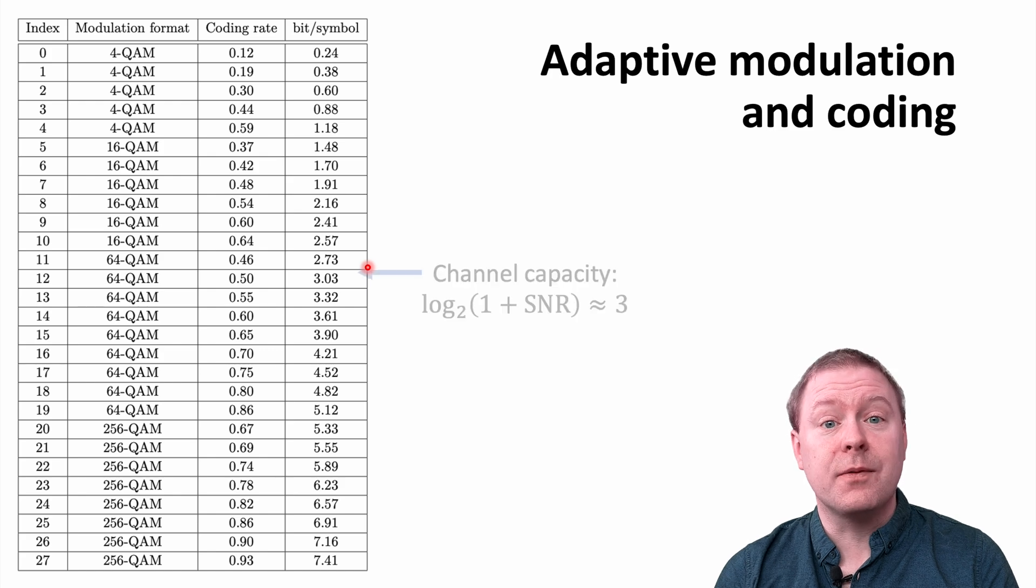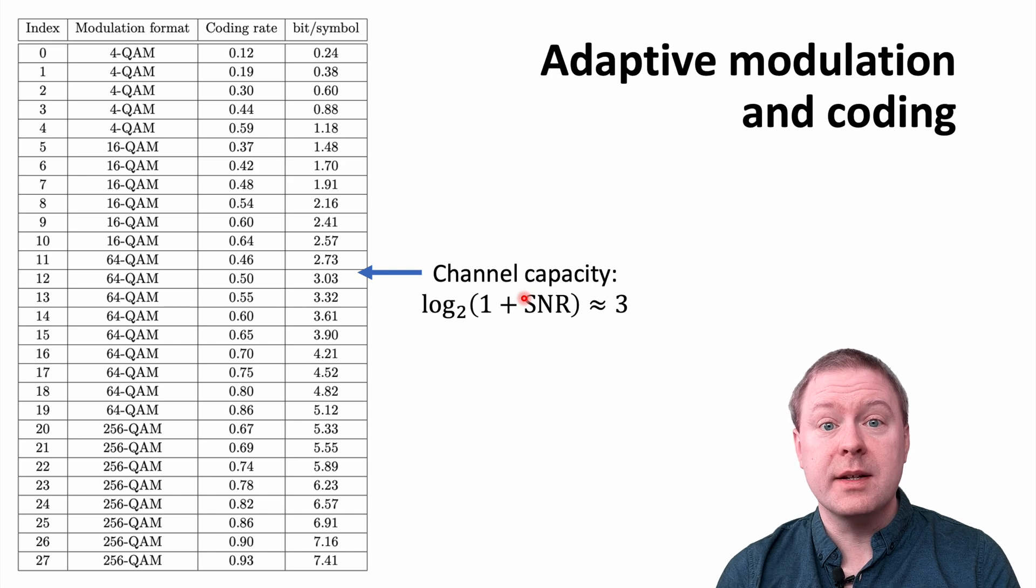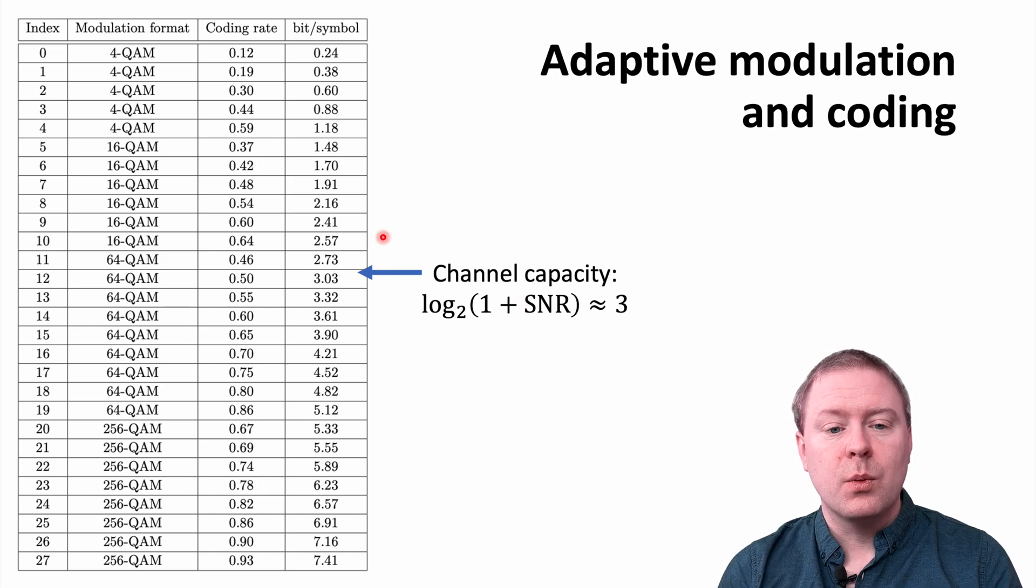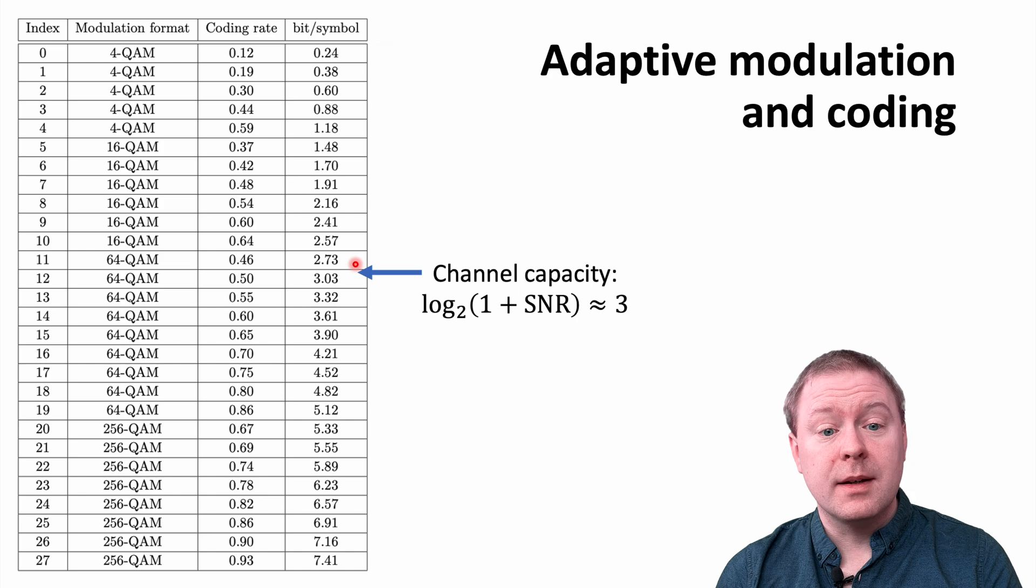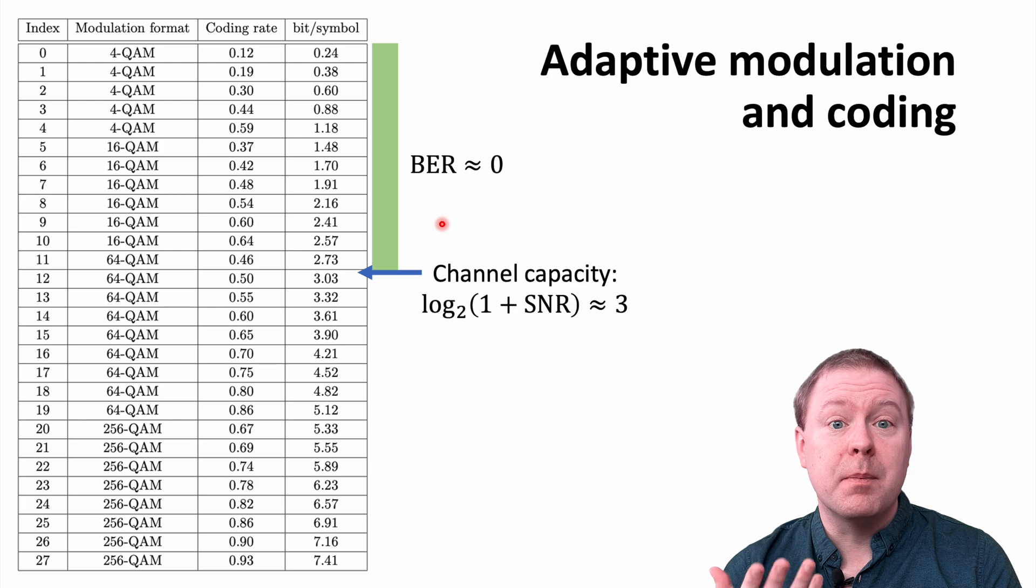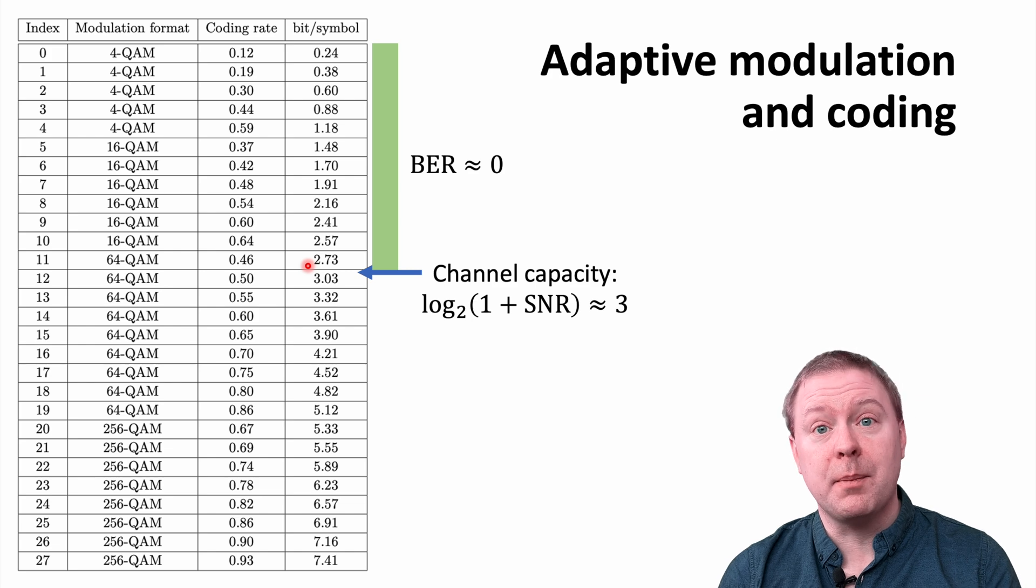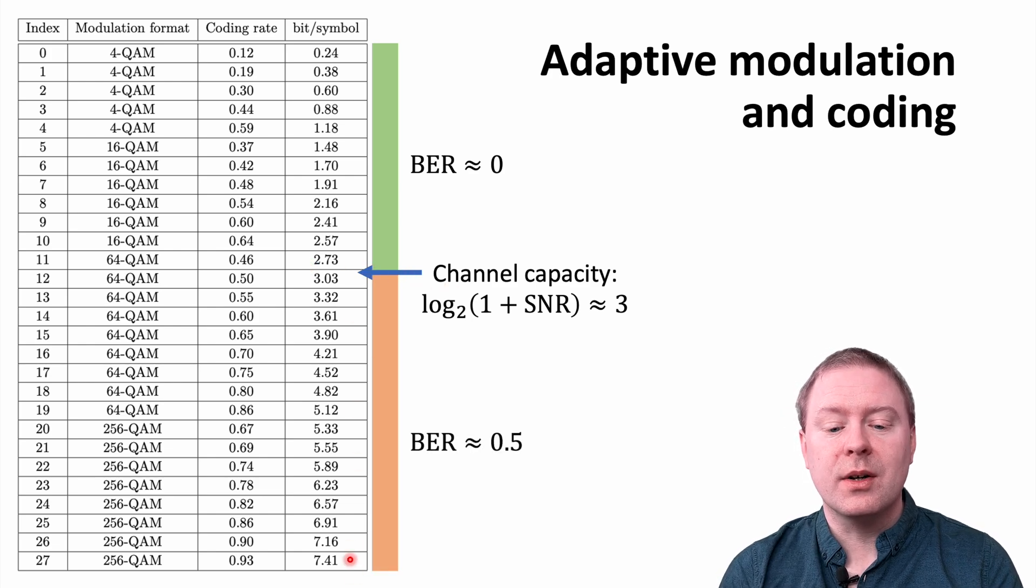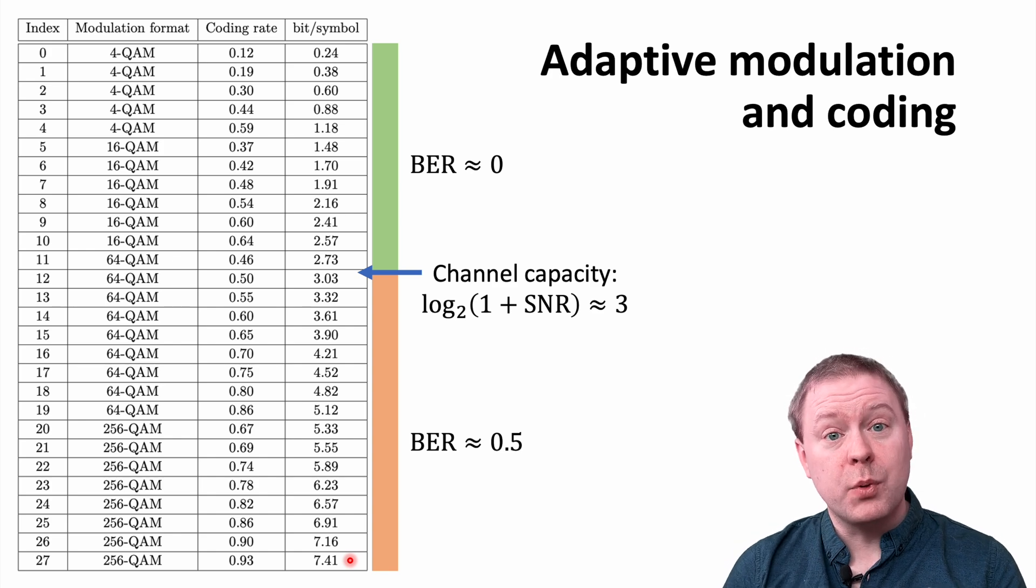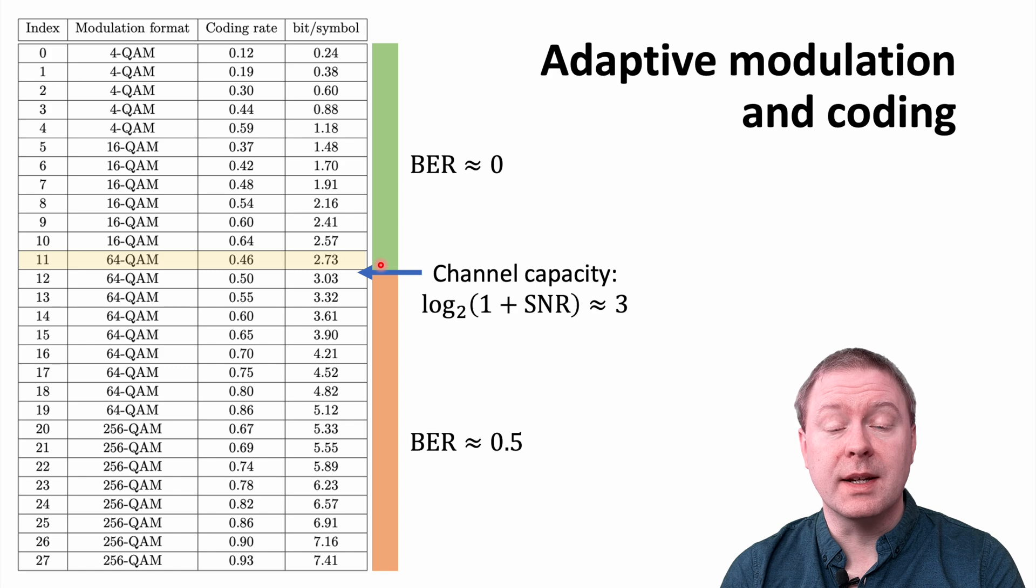The connection to the channel capacity is the following. We compute the log₂ of 1 plus SNR for the channel that we're having. And this gives us a particular value. Then we start to compare this value with the bits per symbol that you can get with your different modulation and coding schemes that is supported in the system. The ones that have a lower number of bits per symbol, those ones you can achieve with a bit error ratio practically equal to zero. While if you are transmitting at a higher speed than what the capacity is saying, your bit error ratio will be roughly one half. So the main principle is that you compute your channel capacity, you look in the table for the closest smaller number of bits per symbol, and then you communicate using that option.